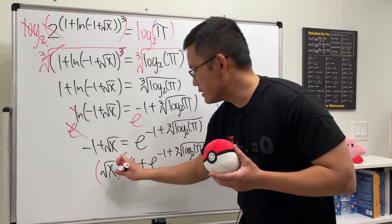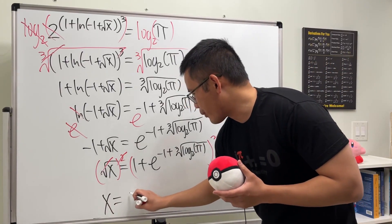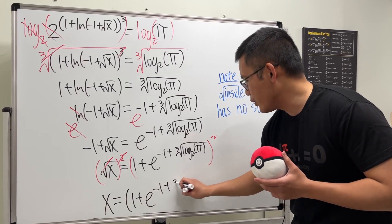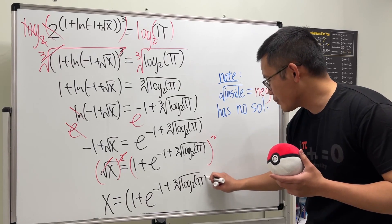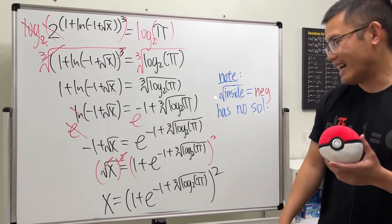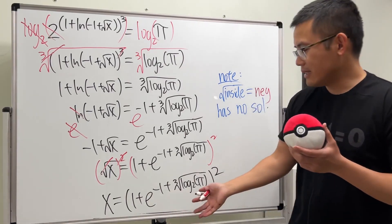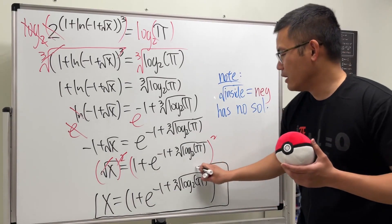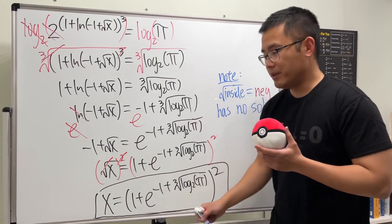Squaring both sides cancels the square root, and x equals the quantity one plus e to the negative one plus the cube root of log base 2 of pi, all squared. It doesn't look innocent, but it's just a number. You can use a calculator to figure out its approximate value.